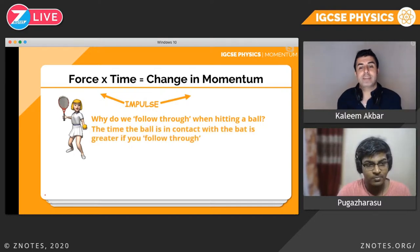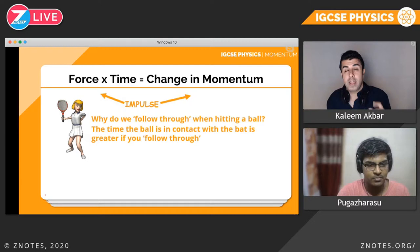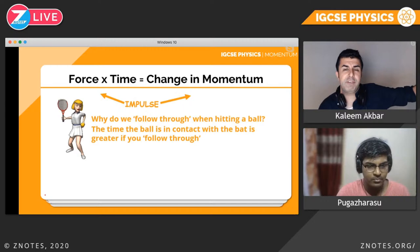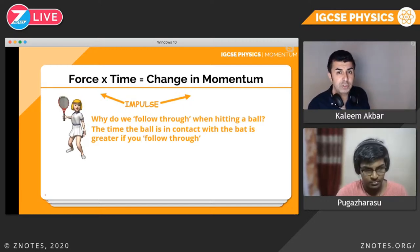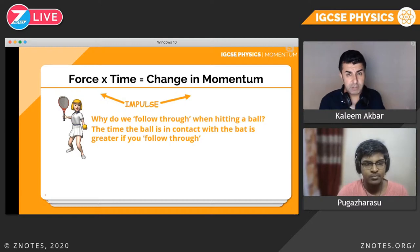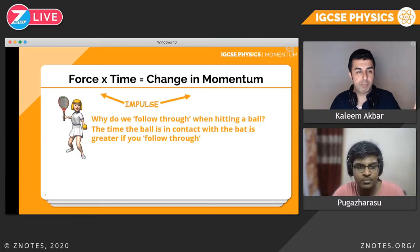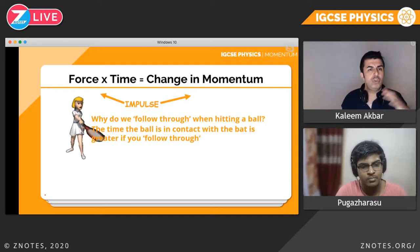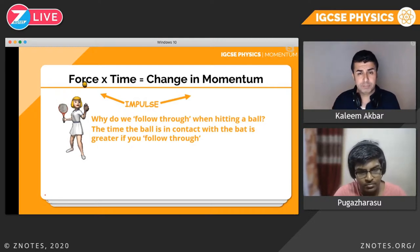The time the ball is in contact with the bat is greater if we follow through. This time we're flipping the example: in the first example we had a car moving that crashed — now we've got a ball that's not moving. Golf ball, tennis ball, cricket ball, basketball, netball — it's not moving, and we want that ball to move as fast as possible.